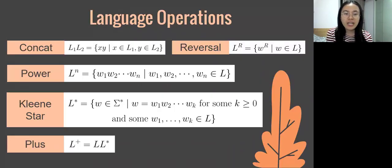Correspondingly, languages have similar operations including concatenation, reversal, and power. There is Kleene star and plus. Kleene star is a highlighted operation that you might not know before.